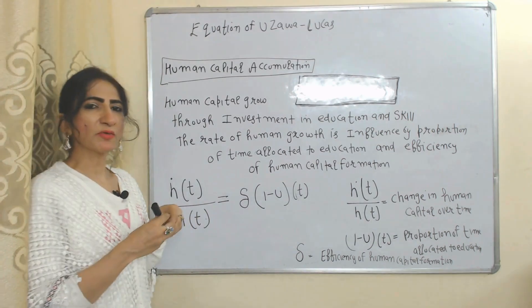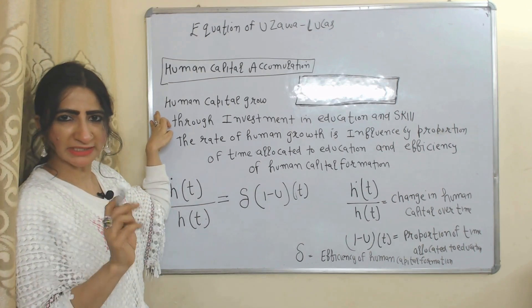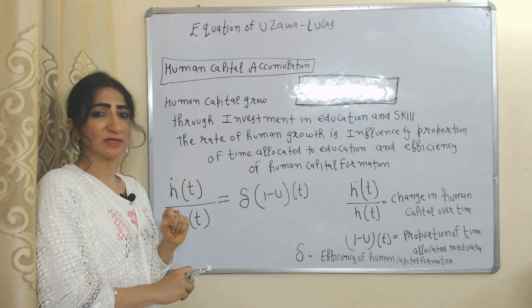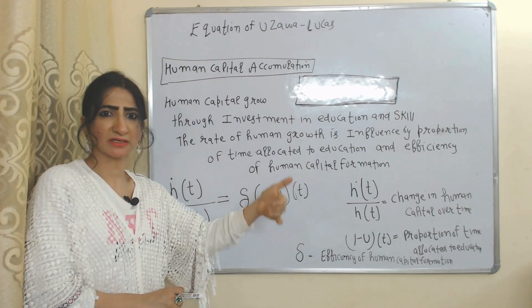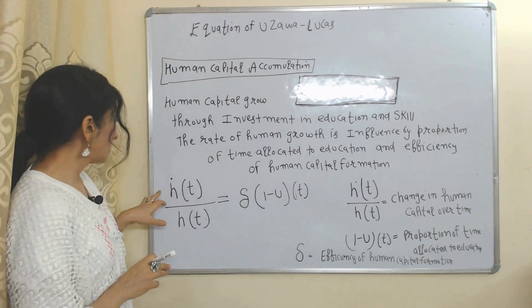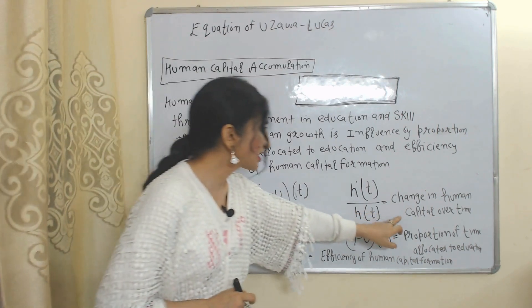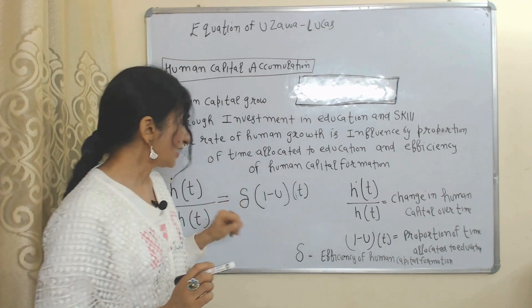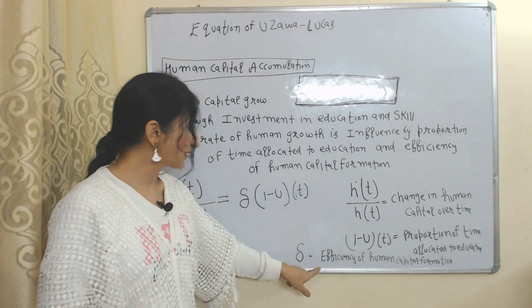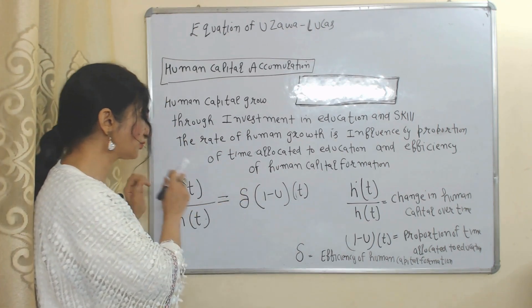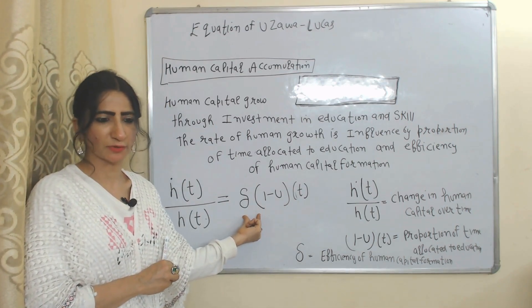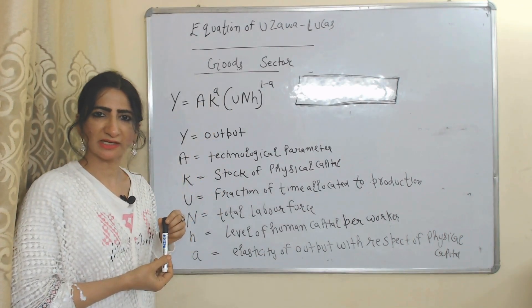The Uzawa-Lucas model focuses on human capital accumulation and its growth through investment in education and skills. The growth rate of human capital depends on two factors: how much time is allocated to education and skills, and the efficiency of human capital formation. In the equation, h-dot(t) over s(t) represents the growth rate of human capital; (1 − u)t represents the proportion of time allocated to education; and the efficiency symbol represents the efficiency of human capital formation.